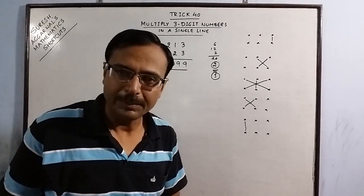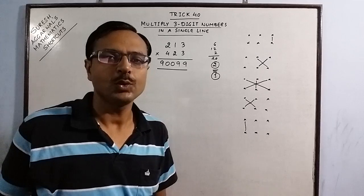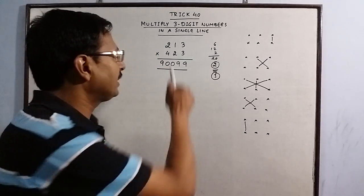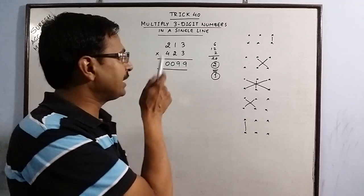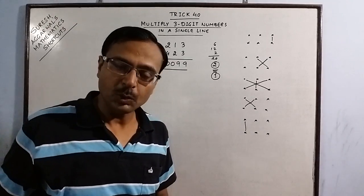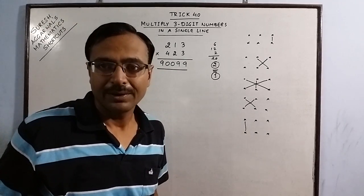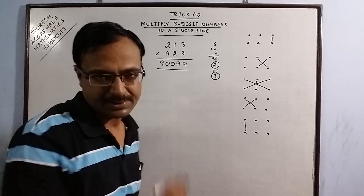Likewise you can multiply higher numbers also but when you take numbers which have 7, 8, 9 these digits between them then you need to have perfection over oral addition in order to get the correct answer.